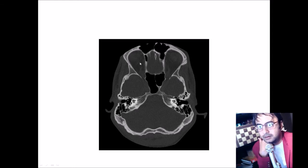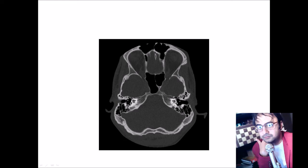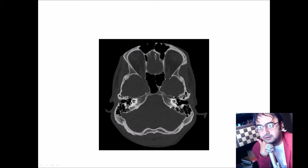This is the frontal bone, and here are the orbits. This is the middle cranial fossa on both sides. Here is the sphenoid sinus with a single septum between them. These are the mastoid air cells. This is the external auditory canal. This small hyperdense area is the cochlea, representing the inner ear. In the middle is the middle cranial fossa. This is the occipital bone, and all of this part is basically the petrous part of the temporal bone. The outer projection here is the external pinna of the ear, which is the vertical part of the temporal bone.